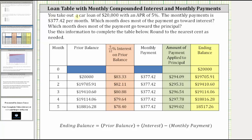Looking at the table, at the end of the first month, you must pay one month's interest on the $20,000. One month's interest would be 1/12th of 5%, or 5/12 percent. And 5/12 percent of $20,000 is $83.33, which means when you make the monthly payment of $377.42, you pay $83.33 in interest. The rest, $294.09, goes toward the principal or reducing the loan amount.